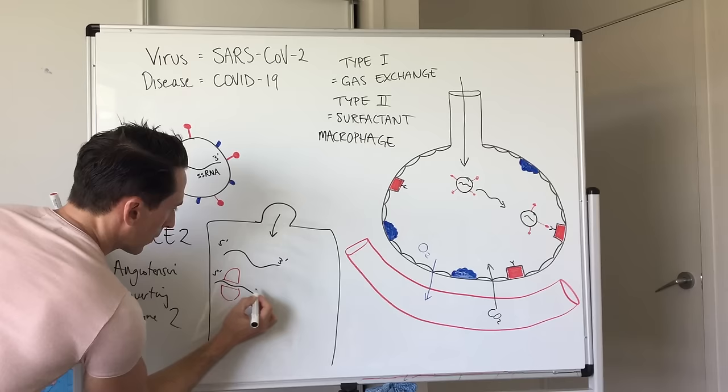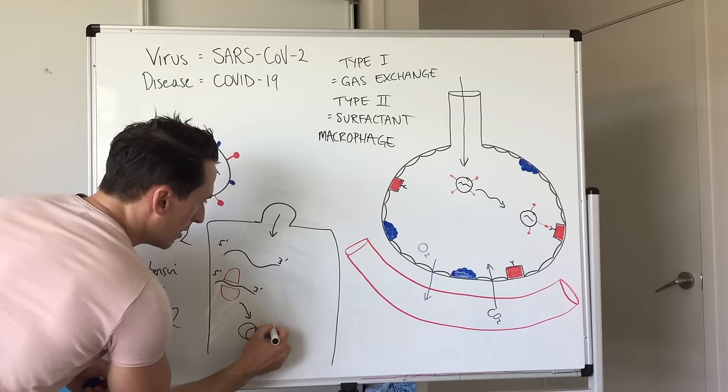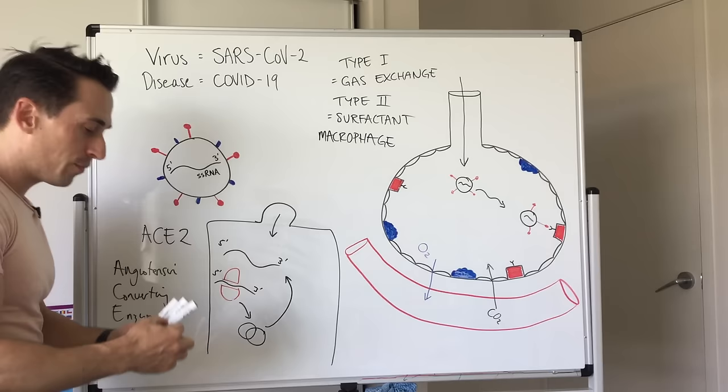It will read this 5-prime to 3-prime and what it spits out is a protein. In actual fact, it spits out two big polypeptide proteins and what these polypeptide proteins do is they can then read this single-stranded RNA 3-prime to 5-prime amazingly and produce a whole bunch of assembly proteins.